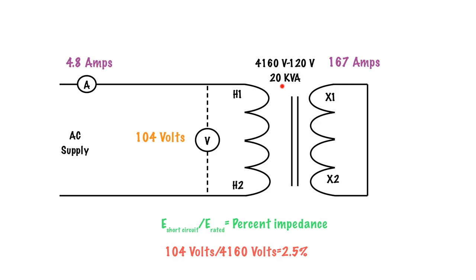So now we have all the ratings for the transformer. We have the KVA rating, we have the voltage ratings, and we have the percent impedance ratings. This percent impedance will become very important in another video where we use it to determine what the fault current available to the transformer is based off of the percent impedance.